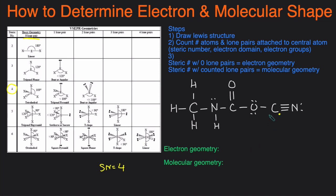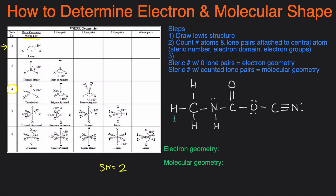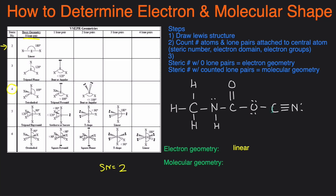For our final atom in this structure, we look at the carbon. Its steric number is just one atom, two atoms, and no lone pairs around the carbon — so a steric number of 2. For the electron geometry, 2 with zero lone pairs gives us linear. Since it has no lone pairs, the electron and molecular geometry are the same — both linear.